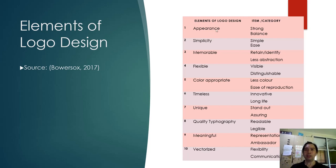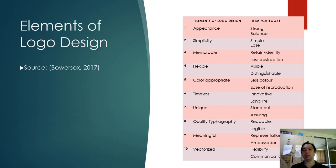The elements of logo design include appearance, simplicity, memorable, flexible, color appropriate, timeless, unique, quality, typography, meaningful, and vectorized. The item category shown is meant for calculation in Kansei engineering. It will be calculated using PLS or partial least squares.